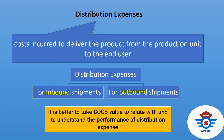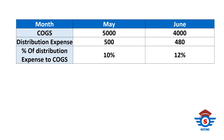We can understand how this percentage varies month-on-month or across different periods. For example, consider the cost of goods sold for the month of May was $5,000 and distribution expense was $500, which means 10% of cost of goods sold is distribution expense. Moving to June, cost of goods sold was $4,000 and distribution expense was $480, which means 12% is the distribution expense.